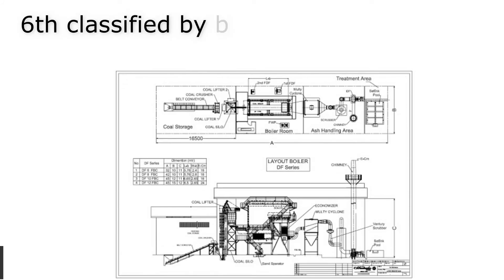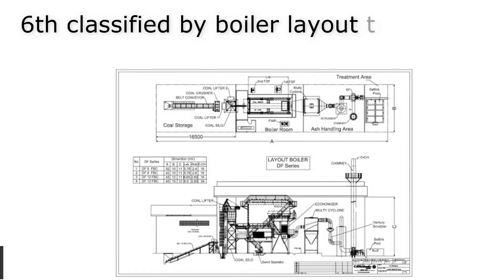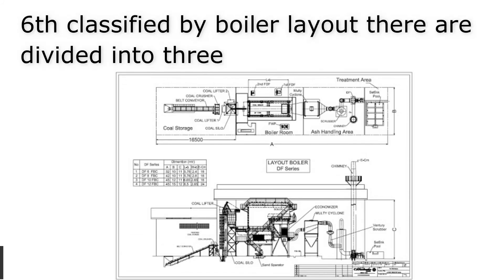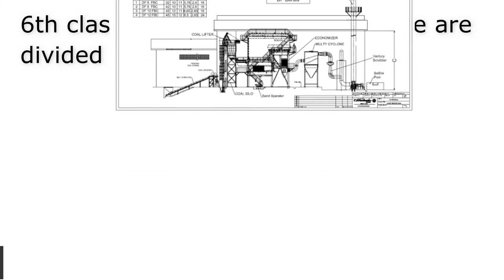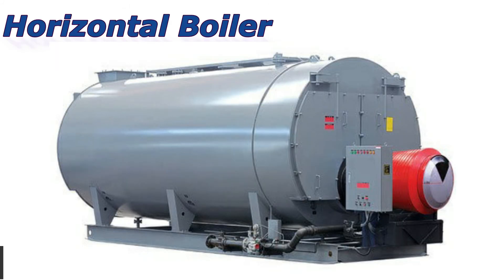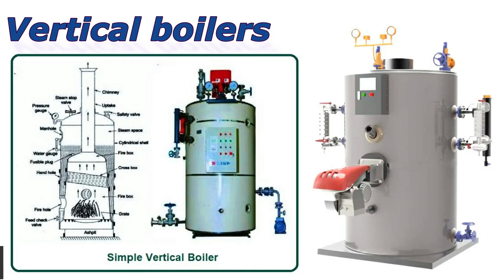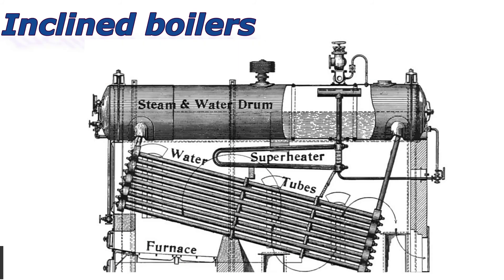Sixth, classified by boiler layout, boilers are divided into three categories: horizontal boilers, vertical boilers, and incline boilers.